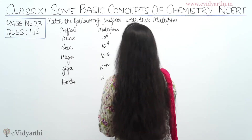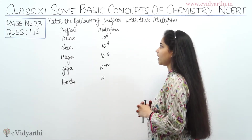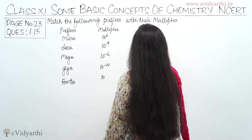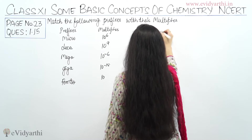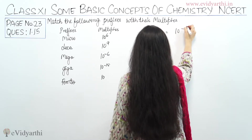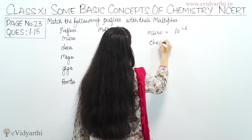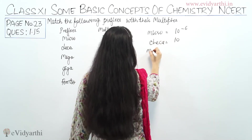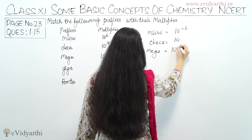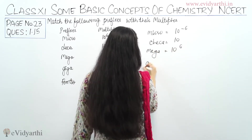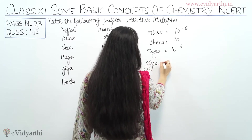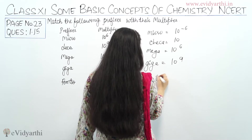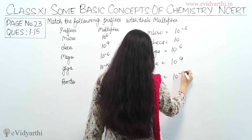Match the following prefixes with their multiples. So, prefixes and multiples — we just need to match them. If I say micro, that will be 10 to the power minus 6. If I come to Deca, Deca will be 10. If I come to Mega, Mega will be 10 to the power 6. Coming to Giga, this will be 10 to the power 9. Coming to Femto, its multiple is 10 raised to the power minus 15.